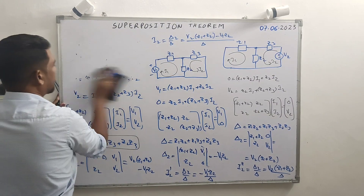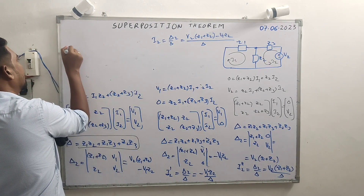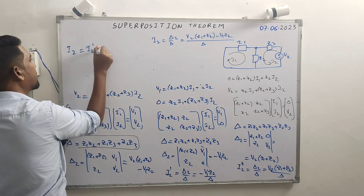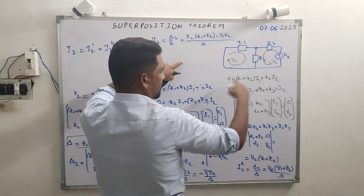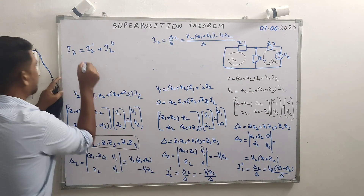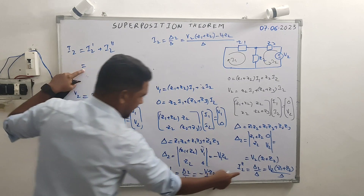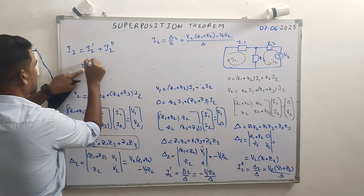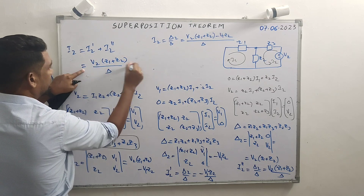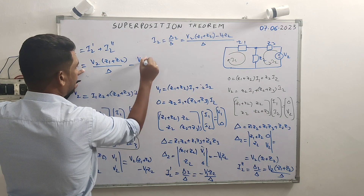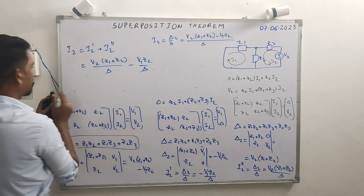According to the superposition theorem, the total current i2 equals i2-dash plus i2-double-dash — responses from individual sources added algebraically. That is: i2 = [minus V1·Z2 + V2·(Z1+Z2)] divided by delta.